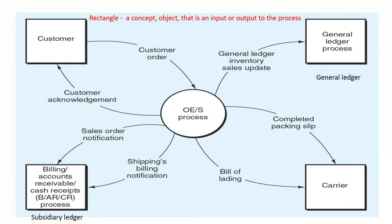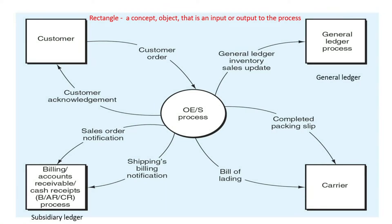The order entry sales process is the only process at the abstract level. This process connects with the objects or concepts which are input and output to the process. There are four objects: the customer, the general ledger, the shipping carrier, and the subsidiary ledgers which include accounts receivable and the sales ledger. So the general ledger is on one side and the subsidiary ledgers on the other side — four objects in total.